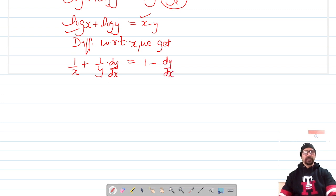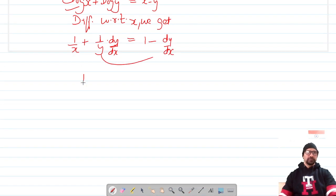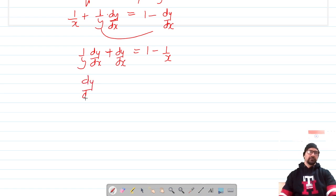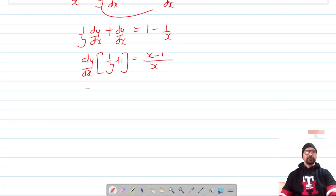Let's group together these two terms: (1/y)(dy/dx) + dy/dx = 1 - 1/x. When we take dy/dx common, it's (1/y + 1) = (x - 1)/x.